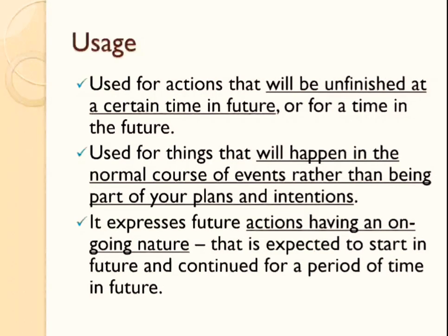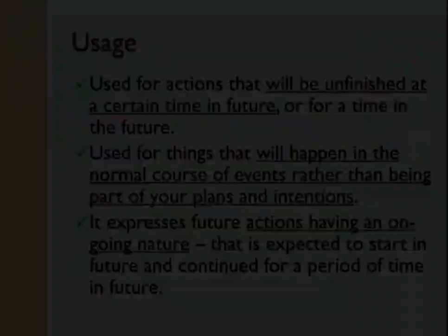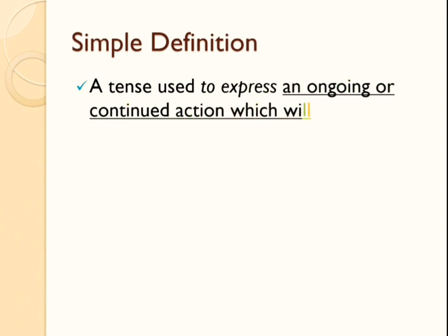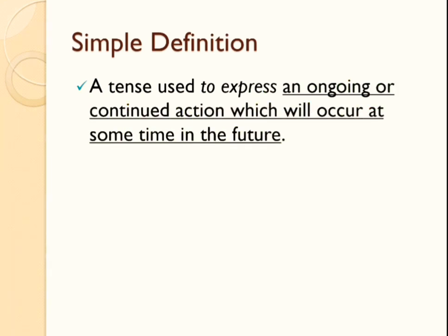So if you can imagine an action which will start in future and which will continue for some time, that brings us to a very simplified definition. What is the definition of the future continuous tense? It is a tense used to express an ongoing or continued action which will occur at some time in future. If there is an action which is continuing for some time in the future, you have to use the future continuous tense and its rules to describe or demonstrate that situation.